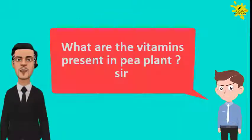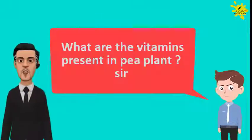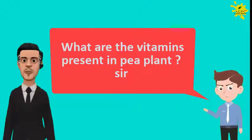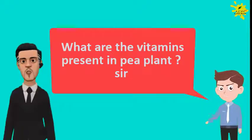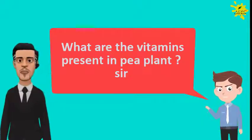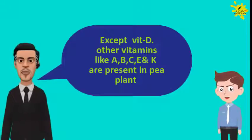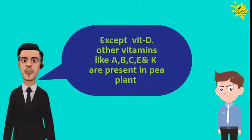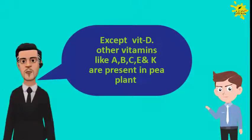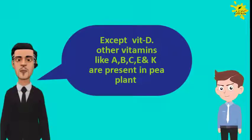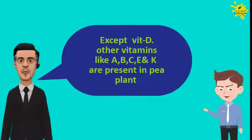What are the vitamins present in pea plant, sir? In pea plant, except vitamin D, other vitamins like A, B, C, E and K are present.